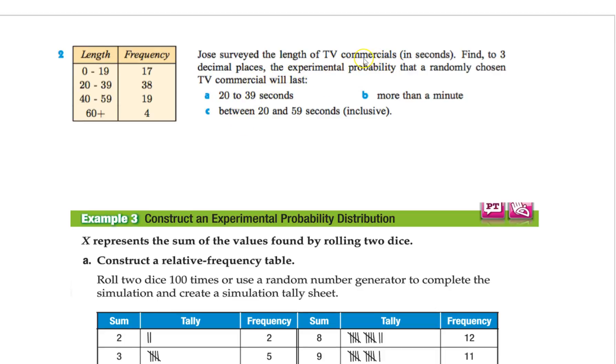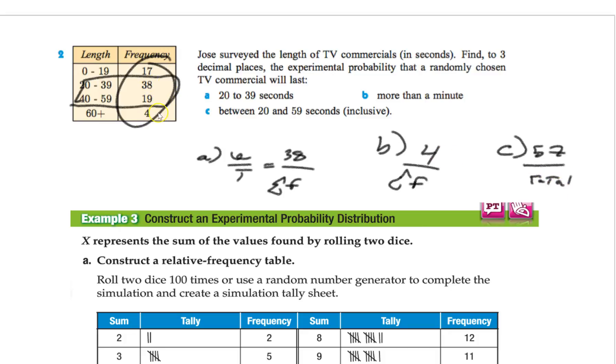Example right here. Jose surveyed the length of TV commercials in seconds. Find three decimal places the experimental probability that a randomly chosen commercial lasts between 20 and 30 seconds. First thing I'm going to do here, I want 1 over total. I don't have a total right now. So I got to add all these up. So you got 17, 38, 19, and 4. And you get some value. And then 20 to 30 is 38. So 38 over whatever that total is. B, more than a minute. So here's a minute, 60 seconds. So more, that's 4. So 4 over whatever our total is. And then C says between 20 and 59 seconds inclusive. So I want you to add these two values up. So that's going to be 57 over the total.